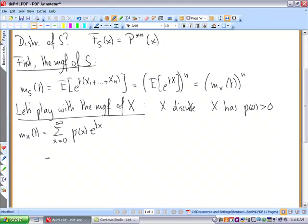Now we pull out of the sum the first argument, so it's p of zero times the exponential of t times zero, which will be p of zero. And what remains is the sum for x from one to infinity of p(x) exponential tx.